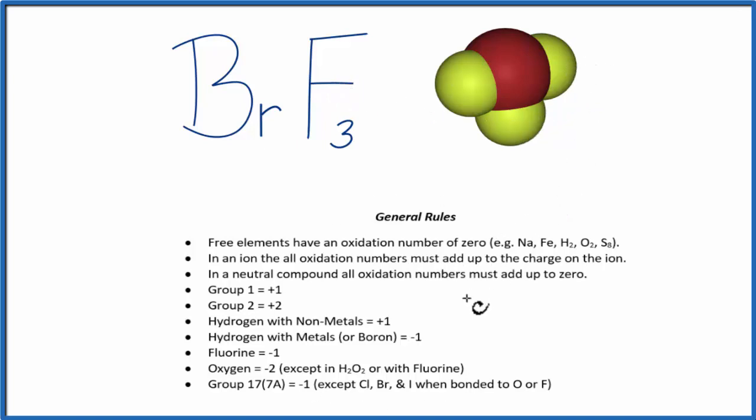So we use these rules here to figure out the oxidation numbers. As we go down, we're not seeing bromine. There's fluorine, though, and fluorine's minus one. So that's its oxidation number. So we have minus one for the fluorines.